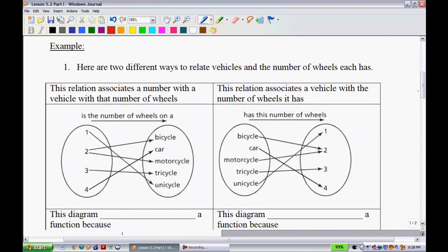Example one. Here are two different ways to relate vehicles and the number of wheels each has. Right here we see the number of wheels on it. So we're mapping one, which is the number of wheels, to the different type of vehicles that we have. One maps onto unicycle because it has one wheel. Two maps onto bicycle and motorcycle because it has two wheels. Three goes to the tricycle and four goes to the bicycle.